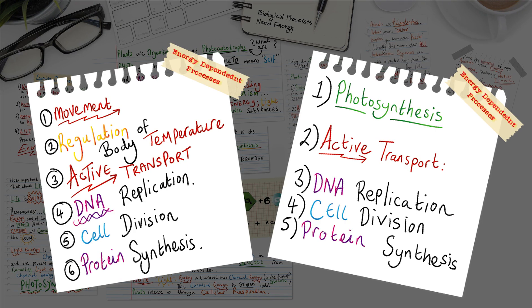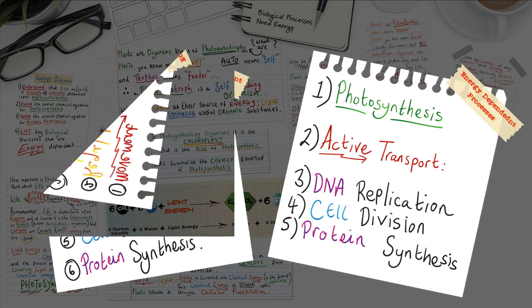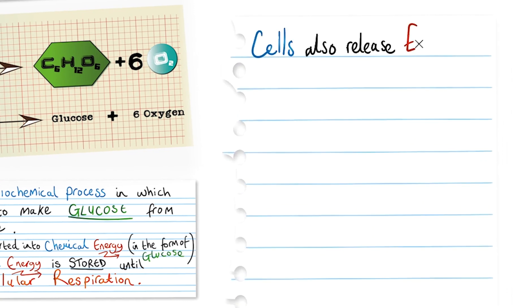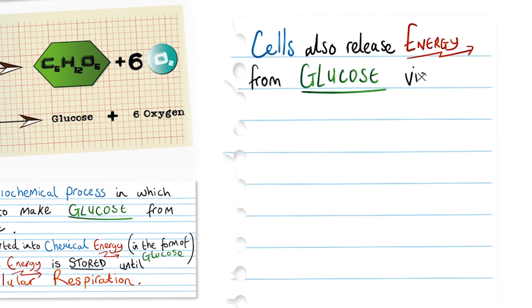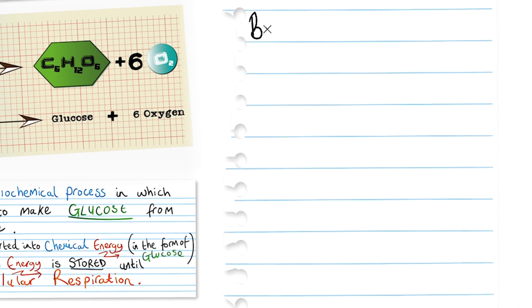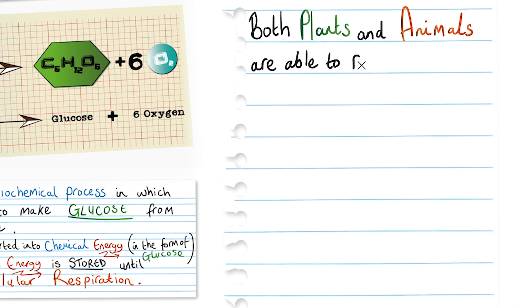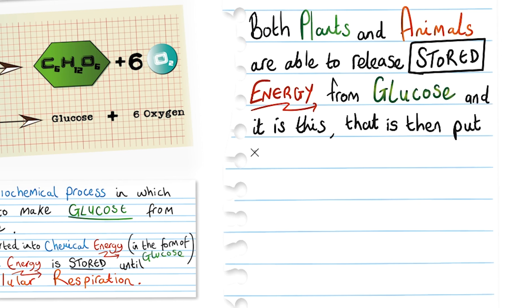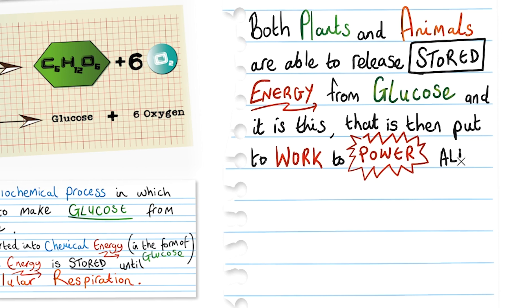Of course, there are countless examples of why and how plants and animals require energy, and the ones I've just mentioned are some of the more commonly expected answers. So make sure you have those boxed off. The final part of this lesson is to consider the fact that cells also release energy from glucose via cellular respiration. Both plants and animals are able to release stored energy from glucose, and it is this that is then put to work to power all biological processes in a cell.